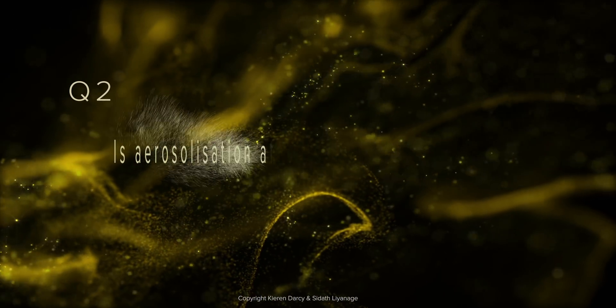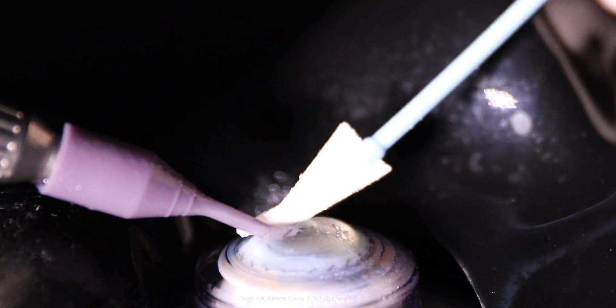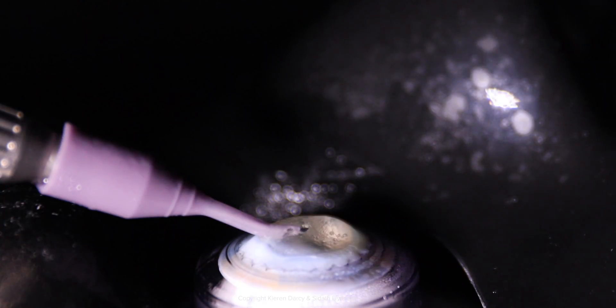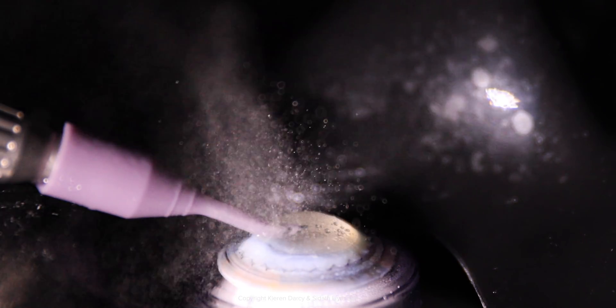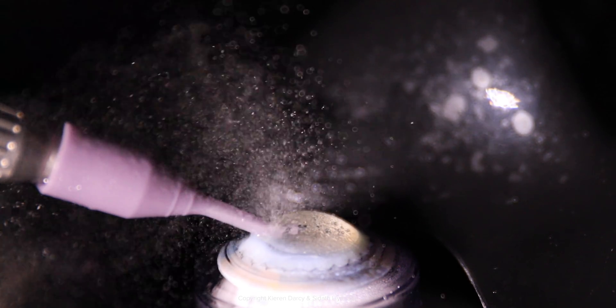Question 2: Is aerosolisation affected by corneal moisture? The cornea is dried with a spear. The aerosol starts immediately. The video evidence confirms the hypothesis. Aerosol originates from the anterior chamber.